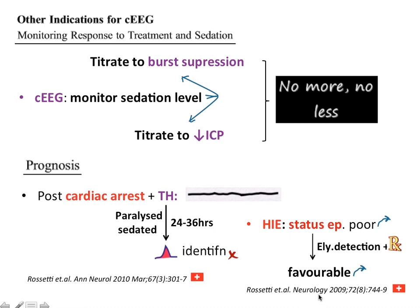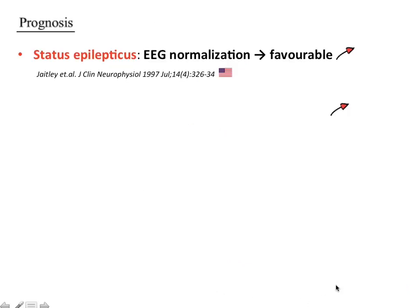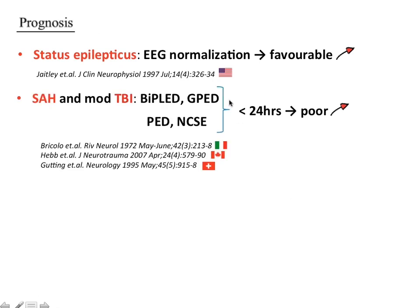Early detection and treatment of status epilepticus in hypoxic ischemic encephalopathy has been shown to improve outcome — demonstrated by Rossetti et al from Switzerland. While post-cardiac arrest patients are typically prognosticated at 72 hours, some may not improve due to underlying seizures. Identifying and treating these patients with continuous EEG may lead to favorable outcomes. In status epilepticus, EEG normalization is associated with favorable outcome. In subarachnoid hemorrhage and moderate TBI, GPEDs, PLEDs, or NCSE within 24 hours are associated with poor outcome.